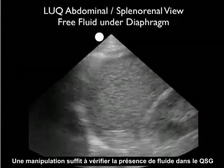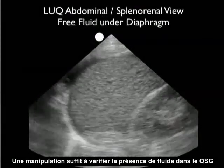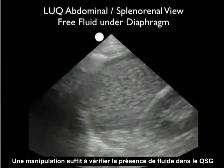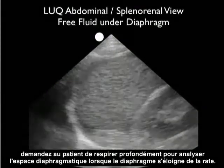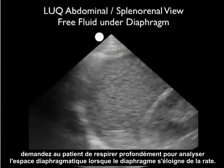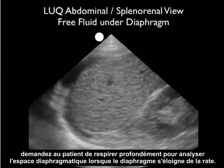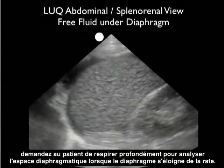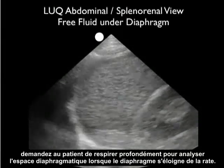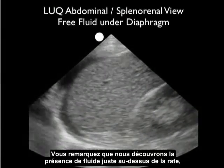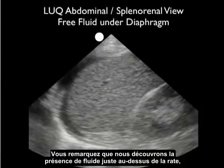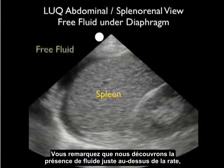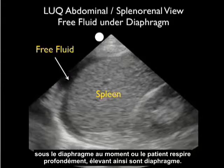One maneuver that can help you uncover fresh fluid within the left upper quadrant is to have the patient take a deep breath and analyze the infradiaphragmatic space as the diaphragm moves upward off of the spleen. Notice here that we uncover the amount of fresh fluid present right above the spleen and below the diaphragm as the patient takes a deep breath and the diaphragm moves superiorly.